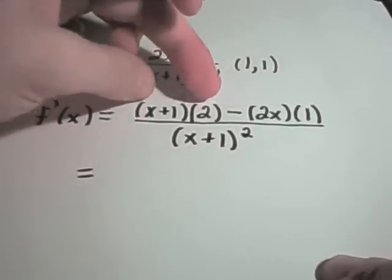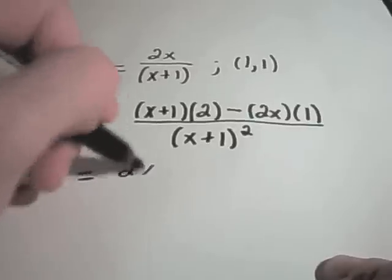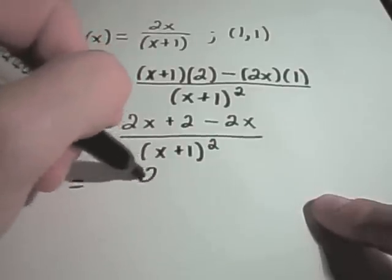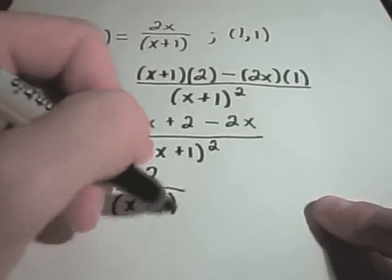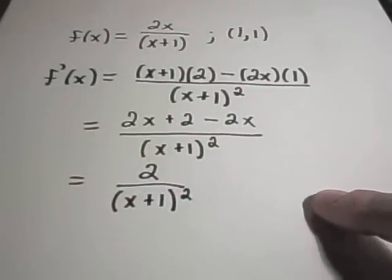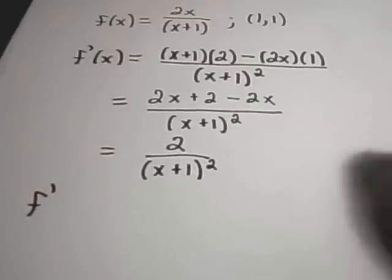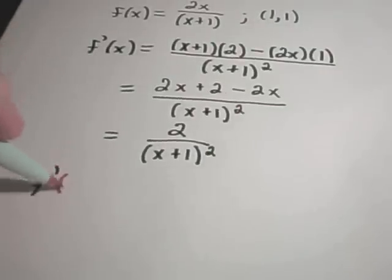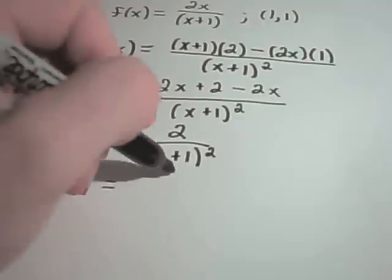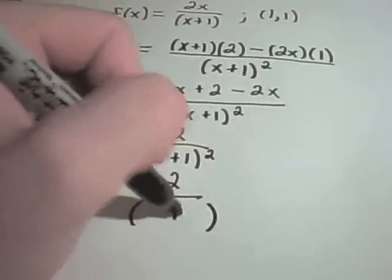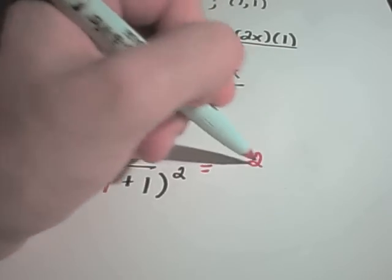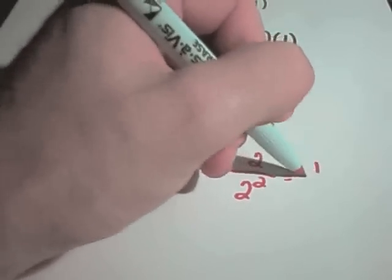Simplifying: distributing gives 2x plus 2 on top, minus 2x, all over (x plus 1) squared. The 2x's cancel, leaving 2 over (x plus 1) squared. To find the slope of the tangent line, I plug in the x-coordinate of 1, giving 2 over (1 plus 1) squared — that's 2 over 4, which equals one half.